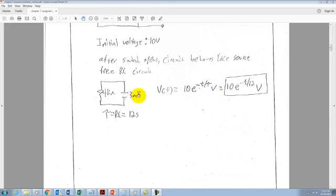So now we have this source-free RC circuit with a 4-kilo-ohm resistor, 3-millifarad capacitor. We multiply those two together to get our tau value equal to RC of 12 seconds.